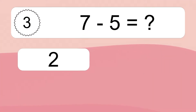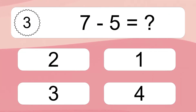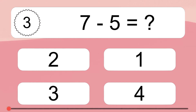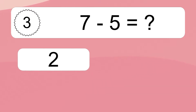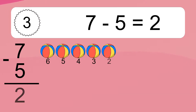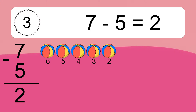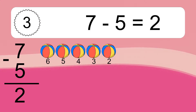7 minus 5 equals what? 7 minus 5 equals 2. Let's count it! 6, 5, 4, 3, 2.